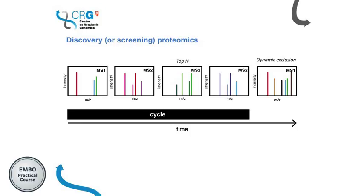We could again select the most intense one, but this would not be very advisable — the most intense one might be exactly the same as what we would have fragmented in the previous cycle, so we would be acquiring redundant information. This is why normally discovery proteomics uses this dynamic exclusion mode, where we take the most intense one unless it has been already fragmented previously.